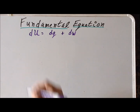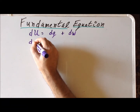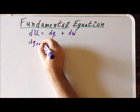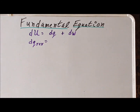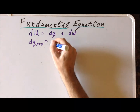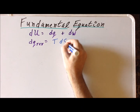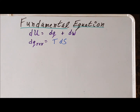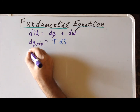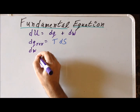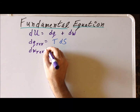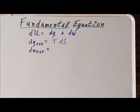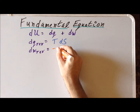Recall that the heat flow dq for a reversible process can be written as TdS, and this expression is very important in the second law of thermodynamics. Also recall that the infinitesimal change in the work for a reversible process, where there is only expansion work, is equal to minus pdV.